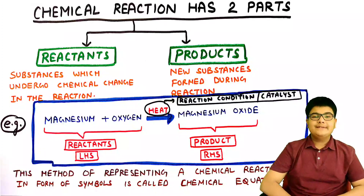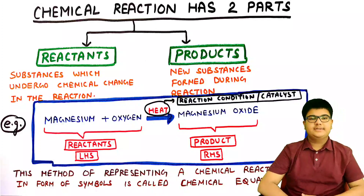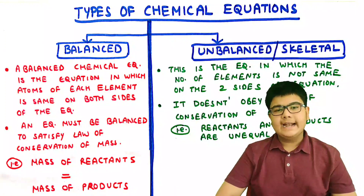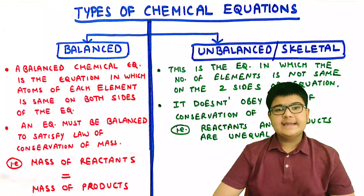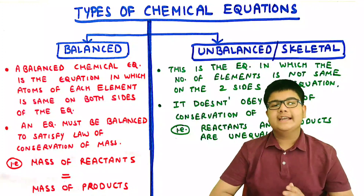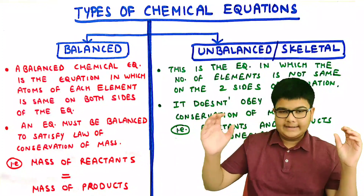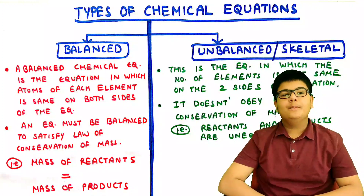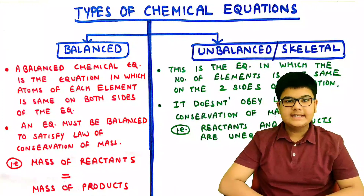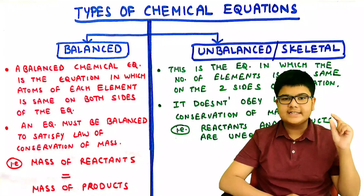This method of representing a chemical reaction using symbols is known as a chemical equation. There are two types of chemical equations: balanced and unbalanced. A balanced chemical equation is one in which the number of atoms of each element is the same on both sides of the equation. An equation must be balanced to obey the law of conservation of mass — meaning the total mass of elements in the reactants equals the total mass of elements in the products.